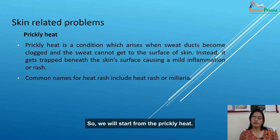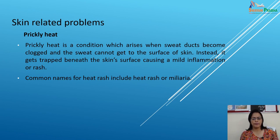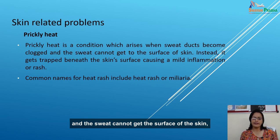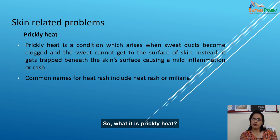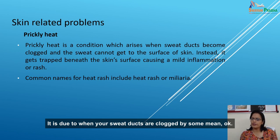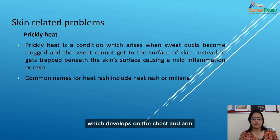We will start from prickly heat. It is a condition which arises when sweat ducts become clogged and the sweat cannot get to the surface of the skin. Instead, it gets trapped beneath the skin surface causing a mild inflammation or some sort of rashes. Prickly heat occurs when your sweat ducts are clogged. It is a heat rash characterized by itchy red spots which develop on the chest, under the armpits, and between the thighs.